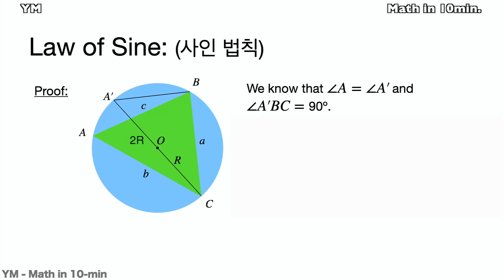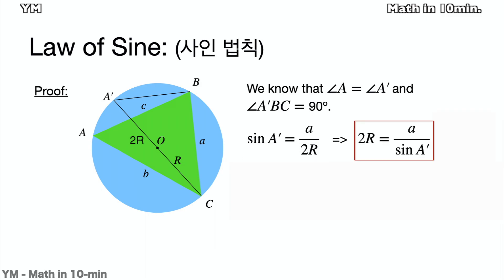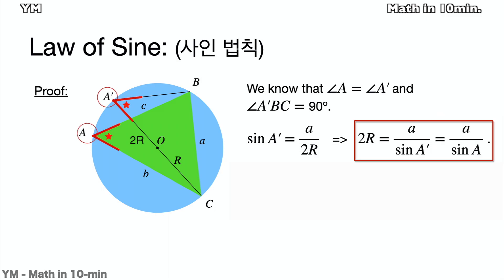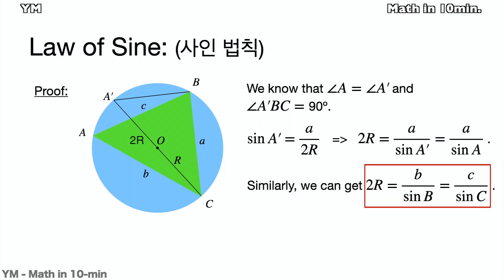In this case, we know that sine A' equals to A over 2R. So 2R is equal to A over sine A'. But since angle A equals to A', 2R is equal to A over sine A. Similarly, B over sine B and C over sine C must also be equal to 2R.